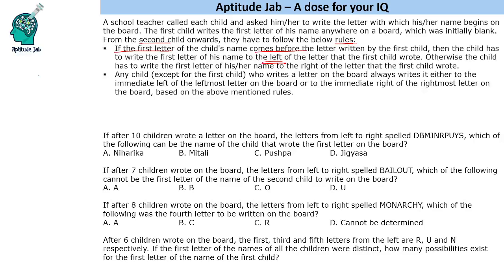For example, let's say the first child is Pranam, so he will write the letter P. The next person is Vidhi — her first letter is V, and V comes after P, so it will be written on the right side. And the next person is Deep, which is D, and D has to be written to the left side. So if something comes after the first letter it goes right, and if it comes before it goes left.